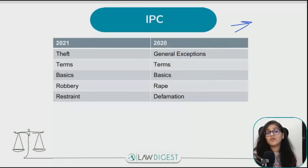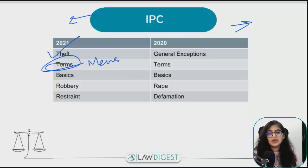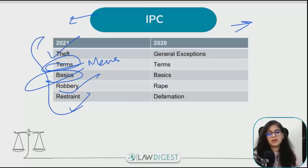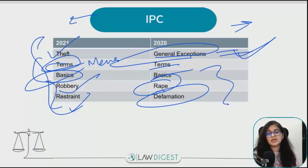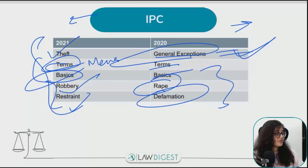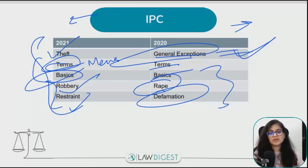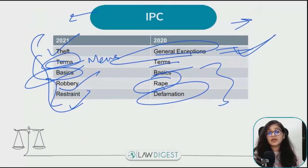IPC - Indian Penal Code, Law of Crimes की बात करें तो theft, basic IPC terms जैसे mens rea, common intention, offense - ये questions पूछे जाते हैं। Robbery, restraint - ये 2021 में देखे। 2020 में general exceptions देखे जो very important हैं। Terms, basics, rape, defamation - अलग-अलग topics से questions आए हैं। 2019 में hurt, grievous hurt, theft, extortion, criminal misappropriation, private defense से questions पूछे गए। IPC cover करते रहें - bare act से cover कर सकते हैं।